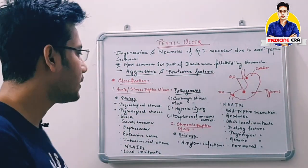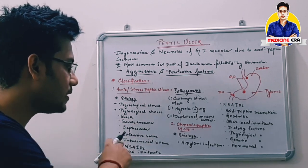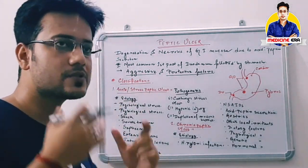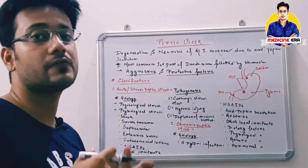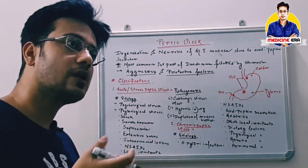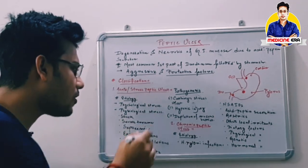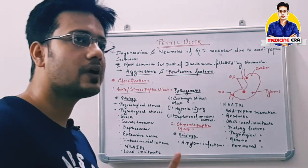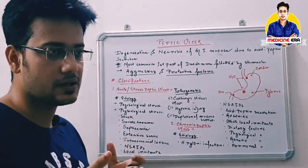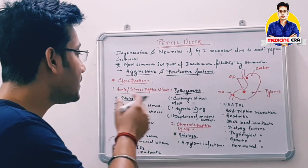The main causes of acute or stress peptic ulcer are psychological stress, physiological stress, shock, severe trauma, septicemia, extensive burns, and intracranial lesions. Psychological stress causes secretion of different chemicals that influence HCL secretion, leading to ulcer formation. Physiological stressors like shock, septicemia — any type of blood infection — and intracranial lesions, meaning damage inside the brain, can also create acute peptic ulcer.